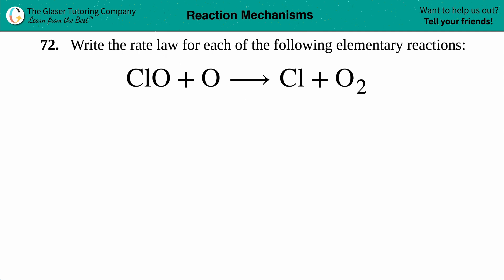Number 72: Write the rate law for each of the following elementary reactions. We have one elementary reaction or one elementary step here, which is ClO plus O yields Cl plus O2. Now before you do any work, just always make sure that whatever equation they give you is balanced. I'm looking at this and it looks balanced to me, so it is a balanced equation.